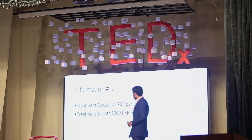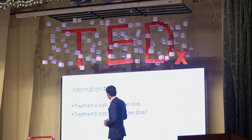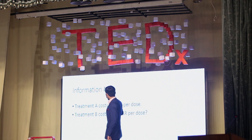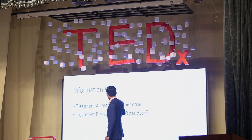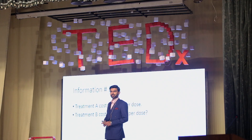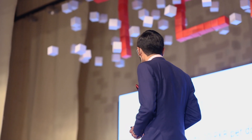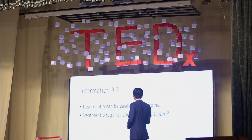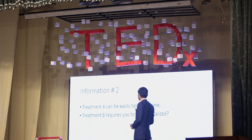Information number one: Treatment A costs 20 rupees per dose, and Treatment B costs 1000 rupees per dose. All those in favor of Treatment A, please raise your hands. I see some people — we have various people in the crowd. There are some people who actually want to spend more. Okay, that's fine. Let's go with information number two.